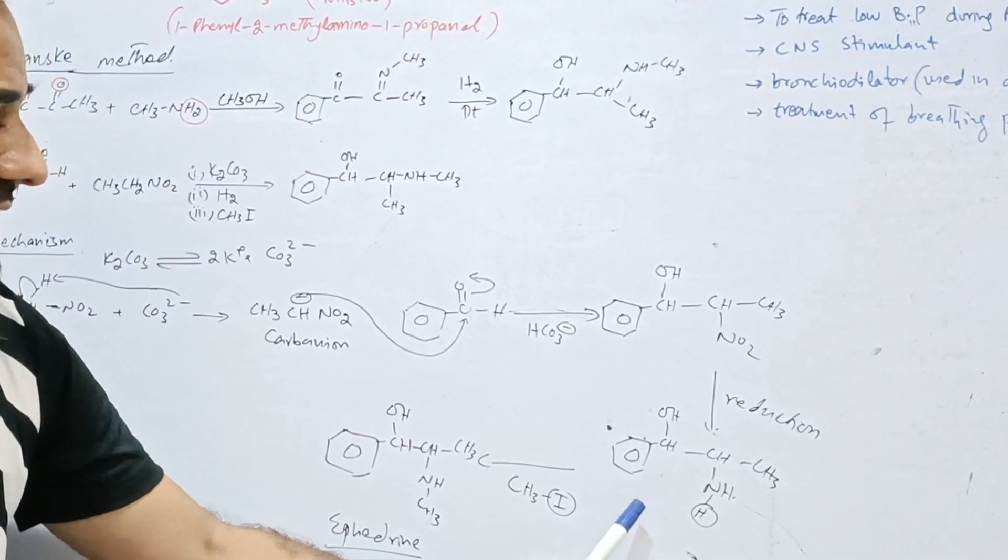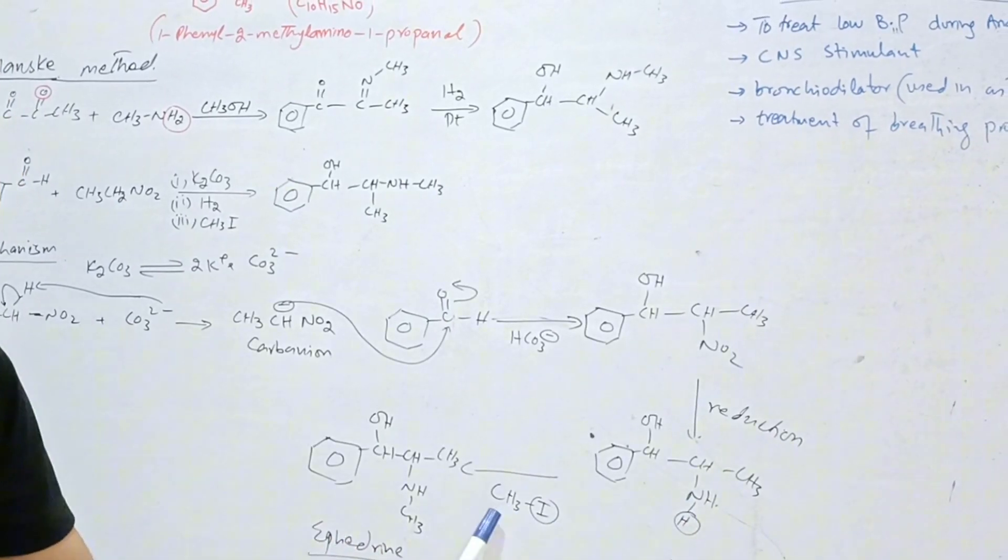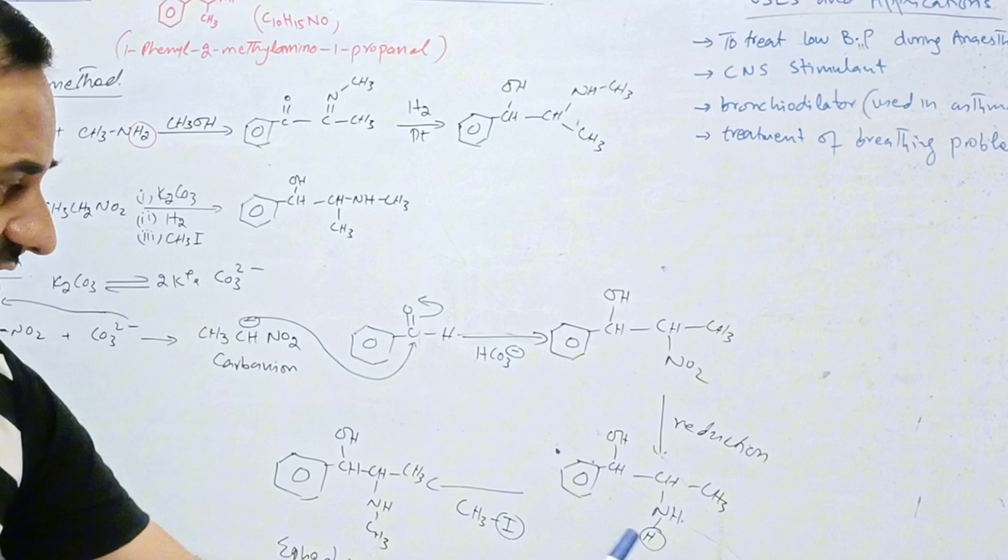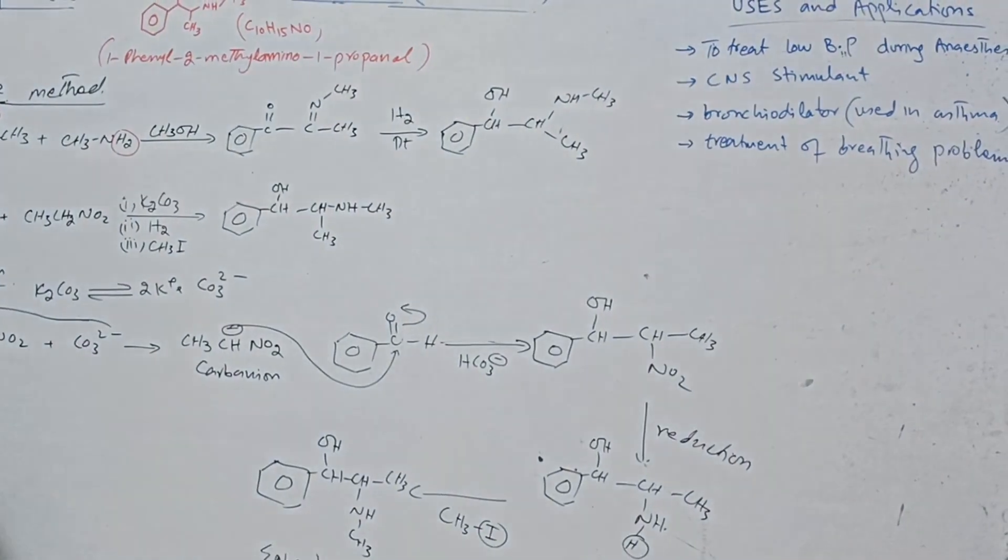And now the N-methylation takes place in the presence of methyl iodide. So HI is removed. And finally, we get ephedrine. So these are two common methods to prepare ephedrine.